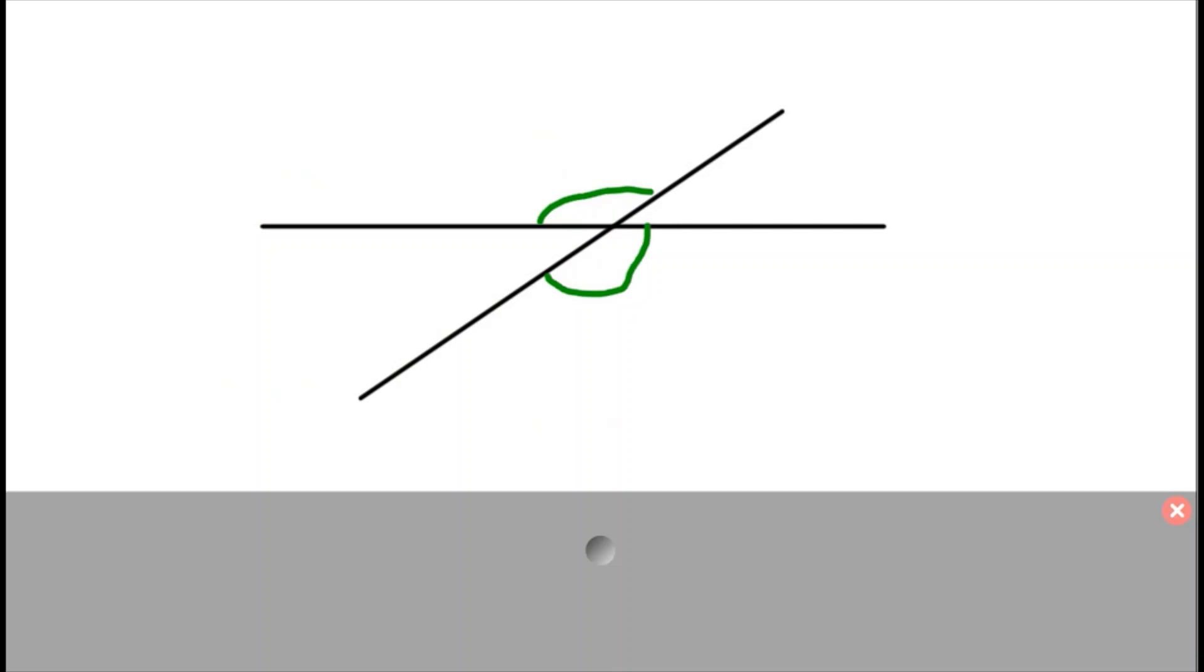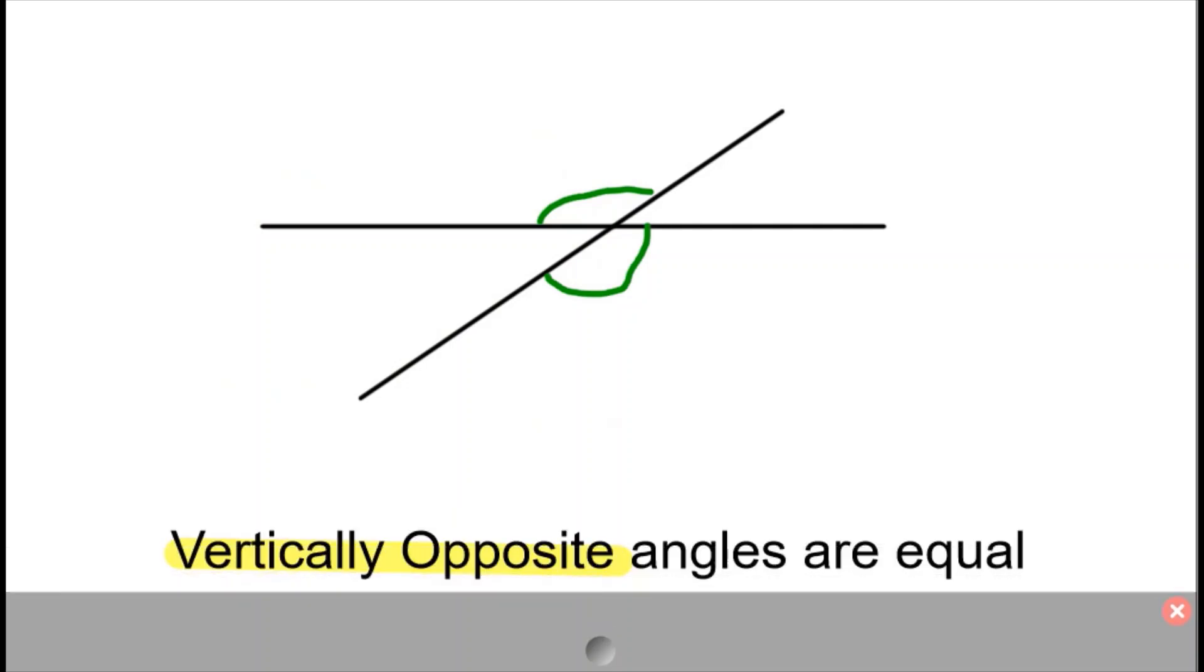Our final example isn't on parallel lines. It's just any two lines intersecting each other. We say that these two angles are vertically opposite and they're equal.